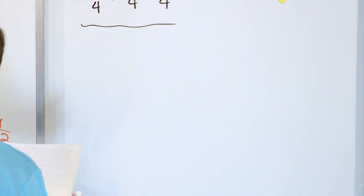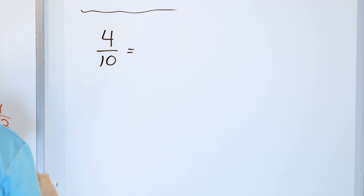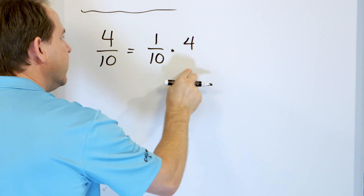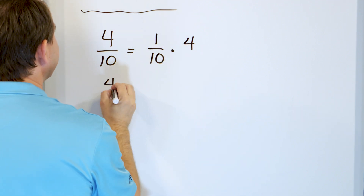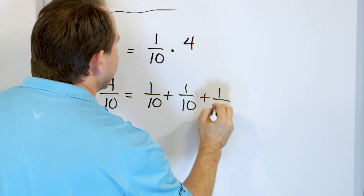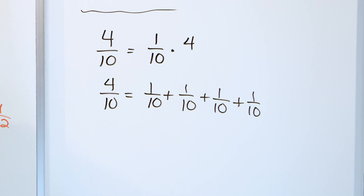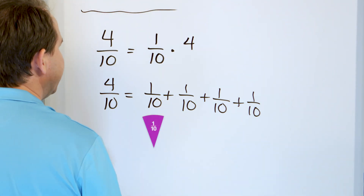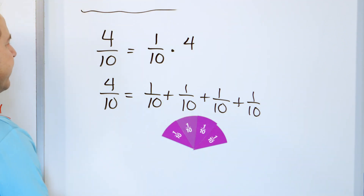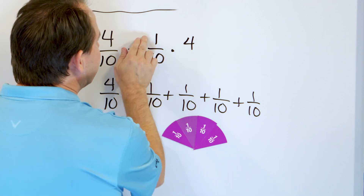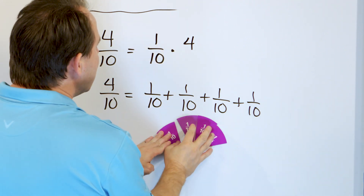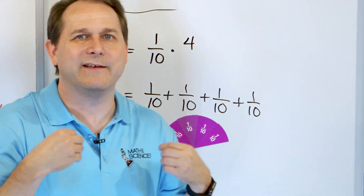This concept should be pretty familiar now because I've been emphasizing this without really saying it. Last problem: 4/10ths. Let's write it as multiplication — that's 1/10th times 4, because 4 times 1 is 4 and 1 times 10 is 10. We can also represent 4/10ths as 1/10th plus 1/10th plus 1/10th plus 1/10th — added 4 times. Here's 1/10th, 1/10th, 1/10th, 1/10th. Add them all together and you get 4/10ths. This larger fraction is just 1/10th multiplied times 4.